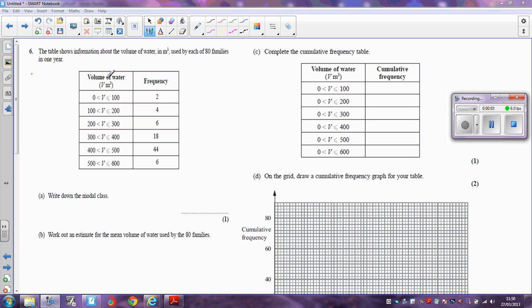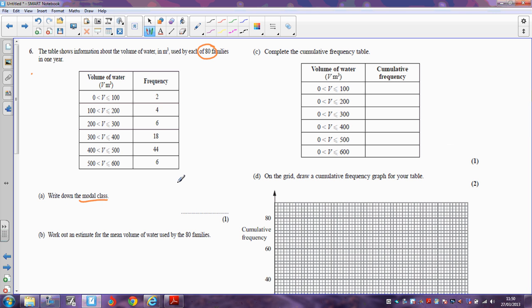Question 6. The question is about the volume of water in cubic metres used by each of 80 families in one year. The first thing that we're asked to find is the modal class.